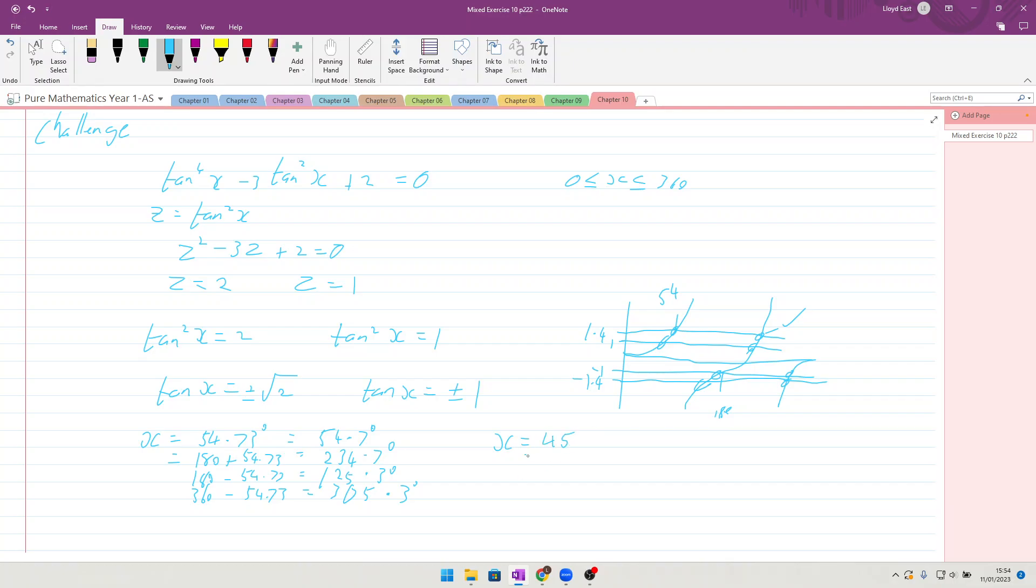And we also get 180 + 45 = 225°, and we get 180 - 45 = 135°, and we also get 360 - 45 = 315°. And that should be the end of the challenge question. Good.